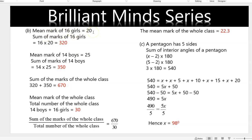The mean mark of 16 girls is 20, so the sum of marks of 16 girls is 16 times 20 equals 320. Mean mark of 14 boys is 25, so the sum is 14 times 25 equals 350. The sum of marks of the whole class is 320 plus 350 equals 670. The class has 14 plus 16 equals 30 students, so mean equals 670 divided by 30 equals 22.3.